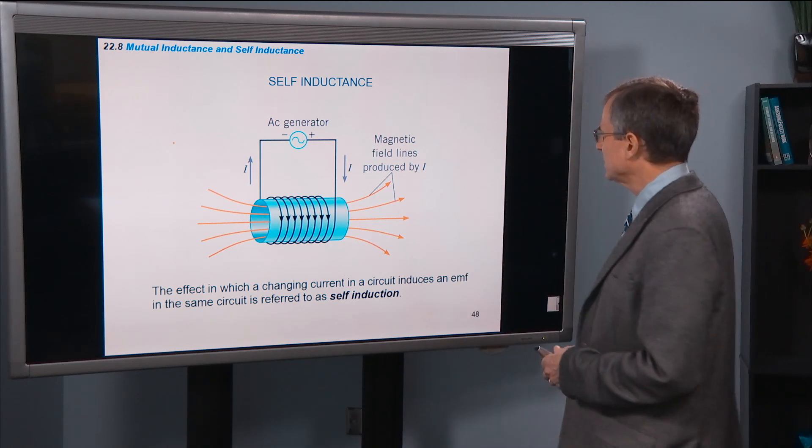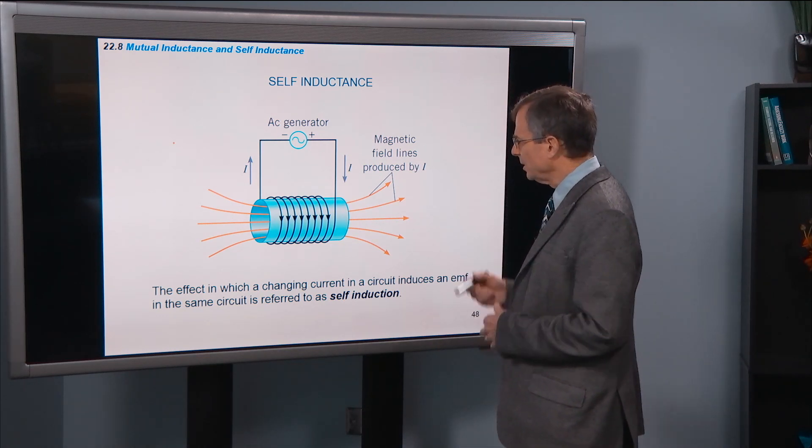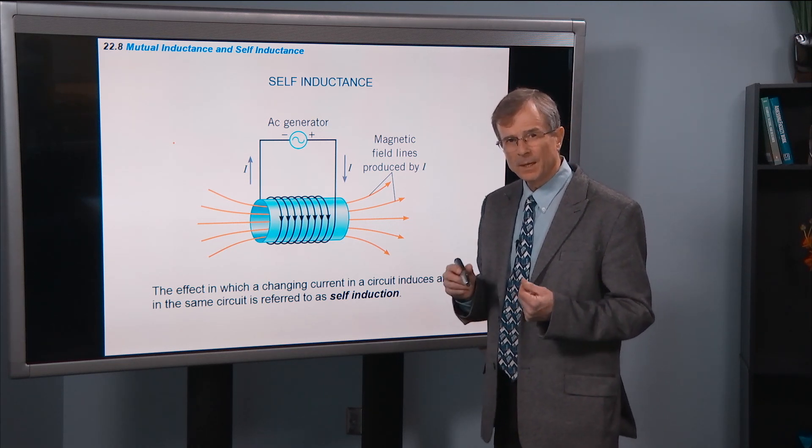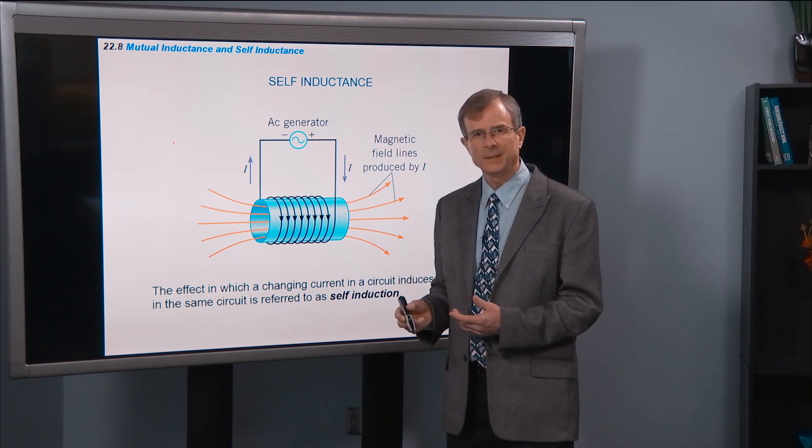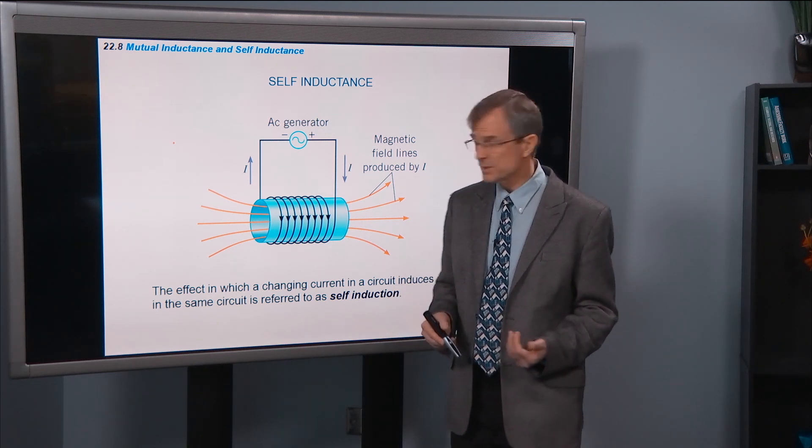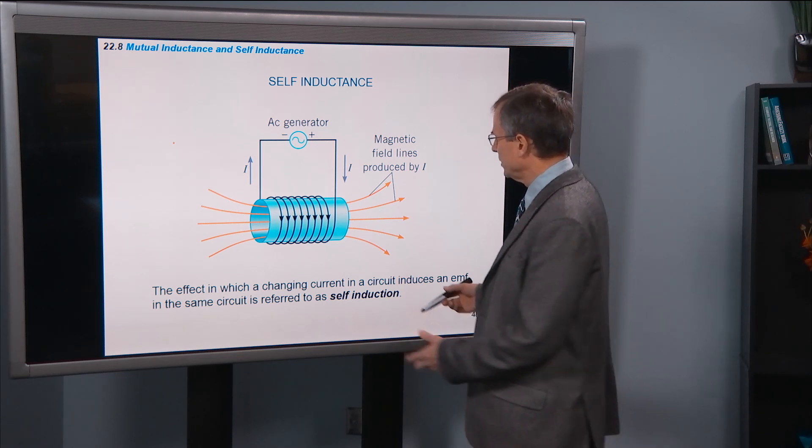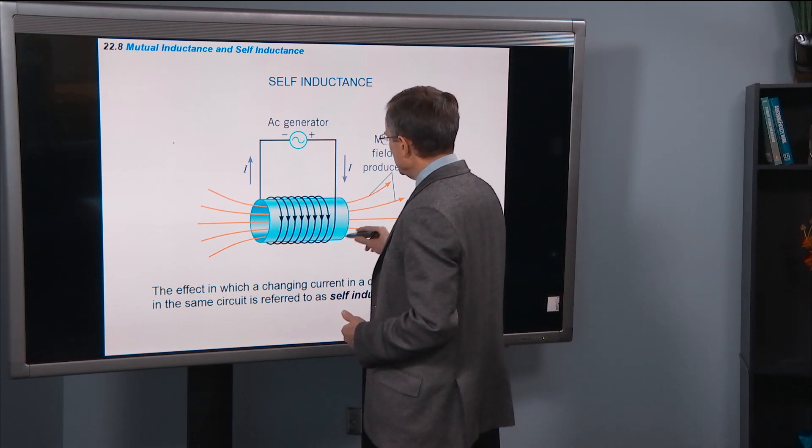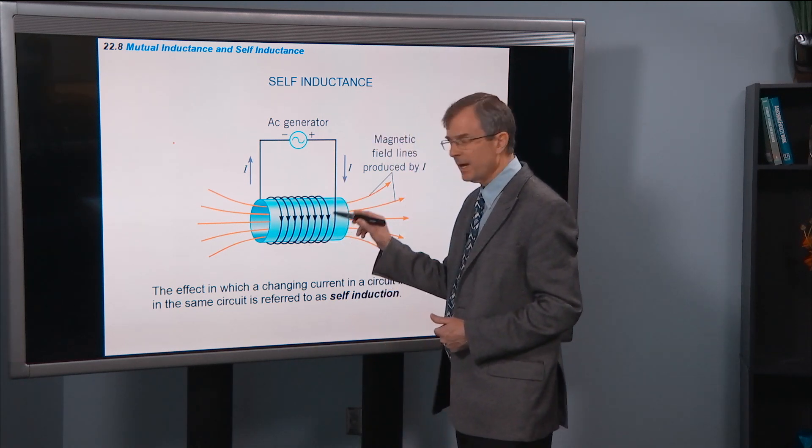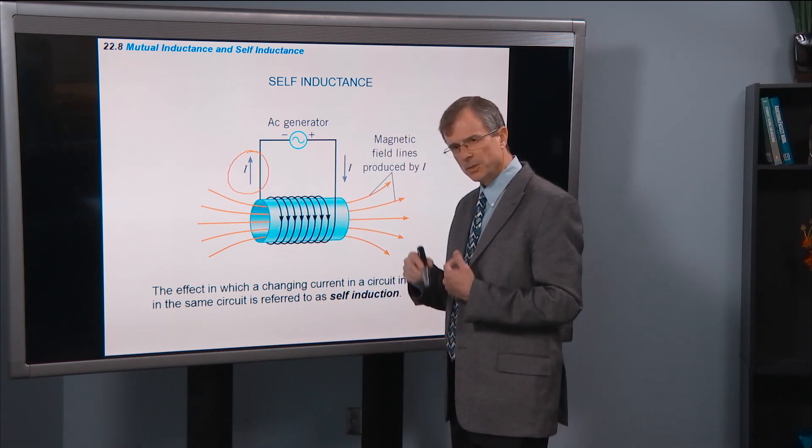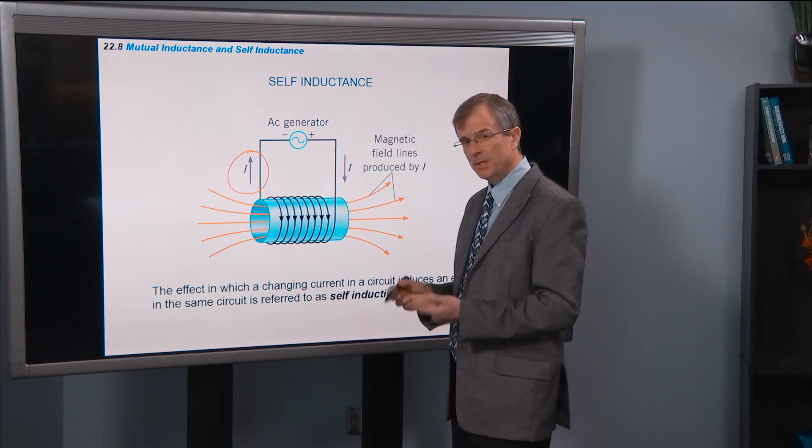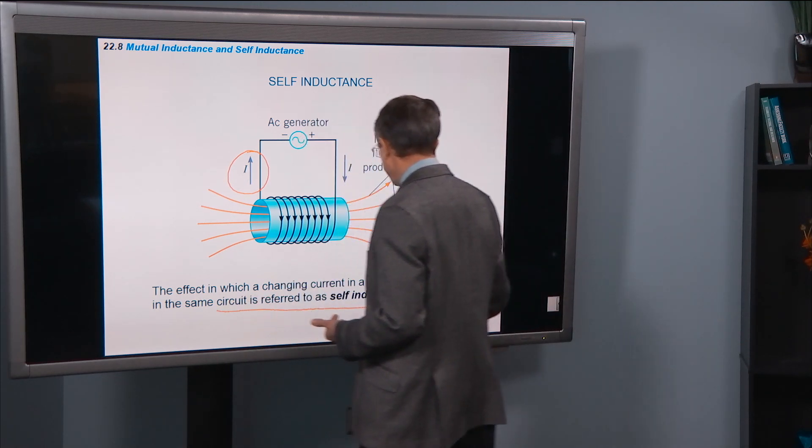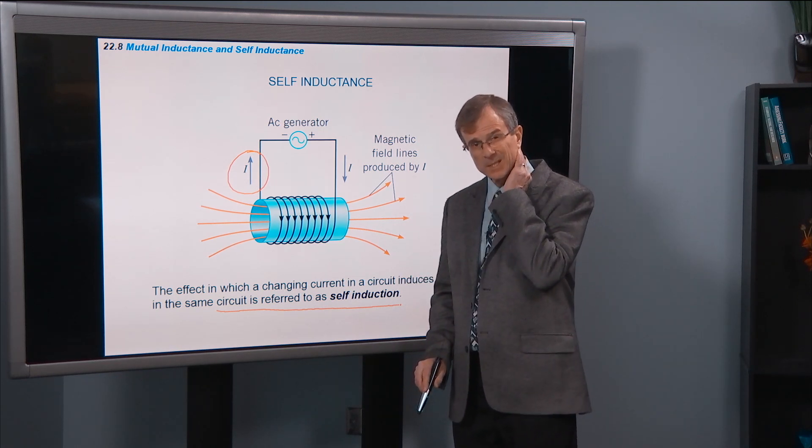Let's talk about self-inductance. You can also induce an EMF in a coil itself. That's the whole principle behind the back EMF that we talked about for motors. So if you've got just a single coil of wire and you're changing the current in that wire, in that coil, that change in current induces an EMF, a back EMF in that same coil. That's called self-induction.